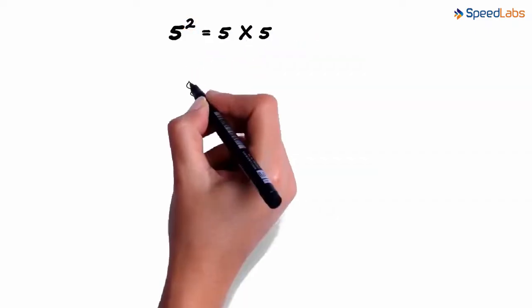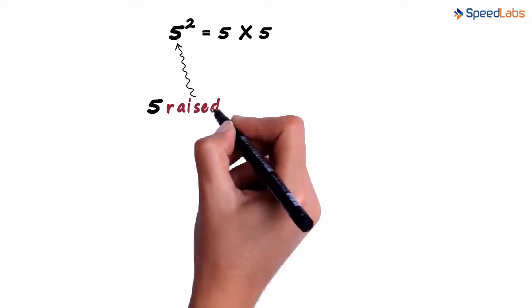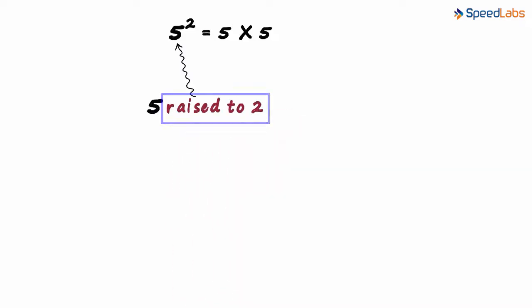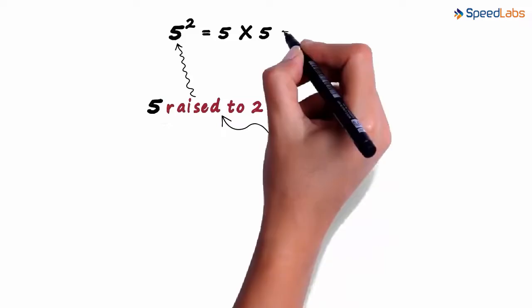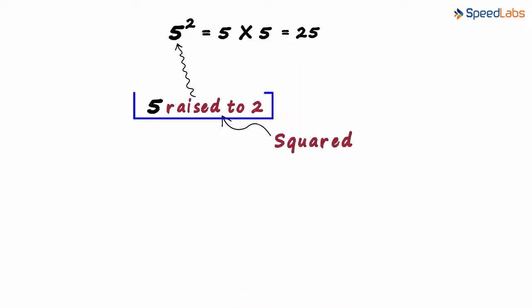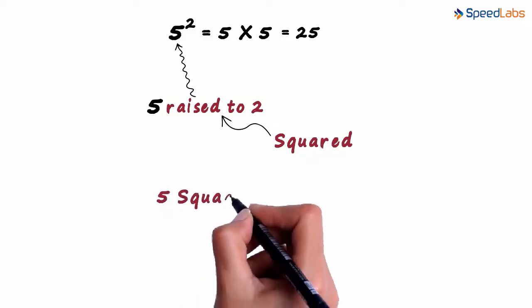We also know that this is read as 5 raised to 2. This raised to 2 can be replaced with the word squared. We know that this equals 25. So instead of saying 5 raised to 2 equals 25, we can say that 5 squared equals 25.